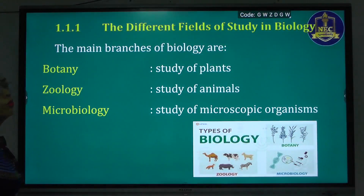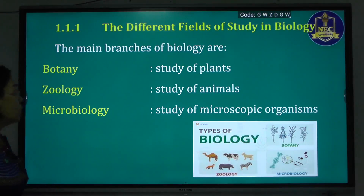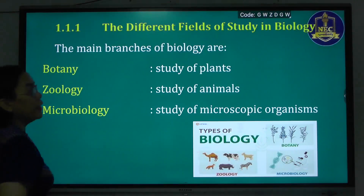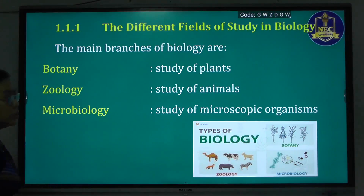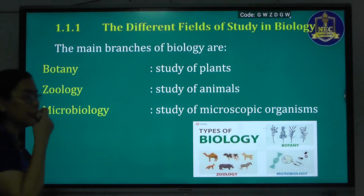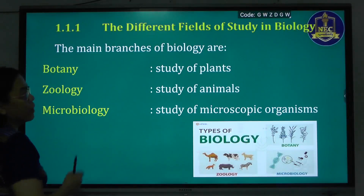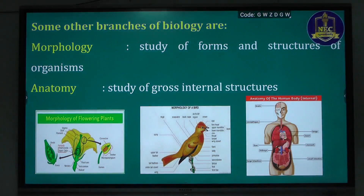There are different fields within biology. The main branch dealing with animals is zoology. The study of plants is botany. Microbiology is the study of microscopic organisms.